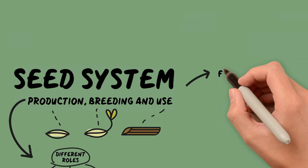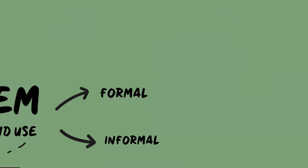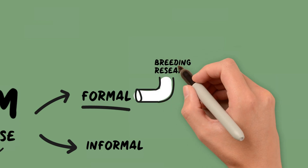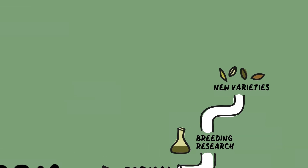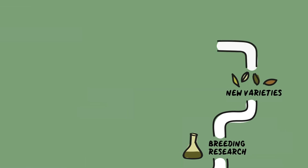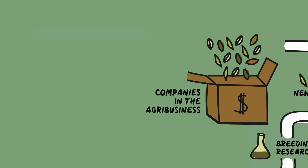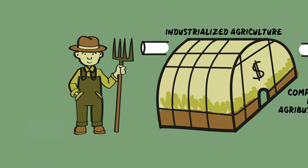Seed systems can be divided into formal or informal, depending on their structure. A formal seed system is a pipeline. Breeding research leads to new varieties and finally multiplication and marketing of the seed. All these activities are controlled by companies in the agribusiness. Farmers are the final users who buy the seed. This is the typical system of industrialized agriculture.